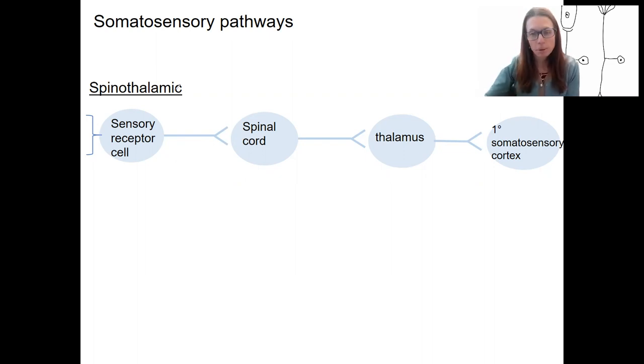So we just did the spinothalamic pathway, this conscious pathway. Because it travels to the primary somatosensory cortex, we are typically aware of these stimuli - various touch and pressure, pain and temperature that travels from where the stimulus is through the first sensory receptor cell. Exceptions for like the Merkel's disc where there's a separate sensory cell. But then we've got this, which is actually a unipolar cell. It synapses in the spinal cord, in the thalamus, and then the primary somatosensory cortex for perception.